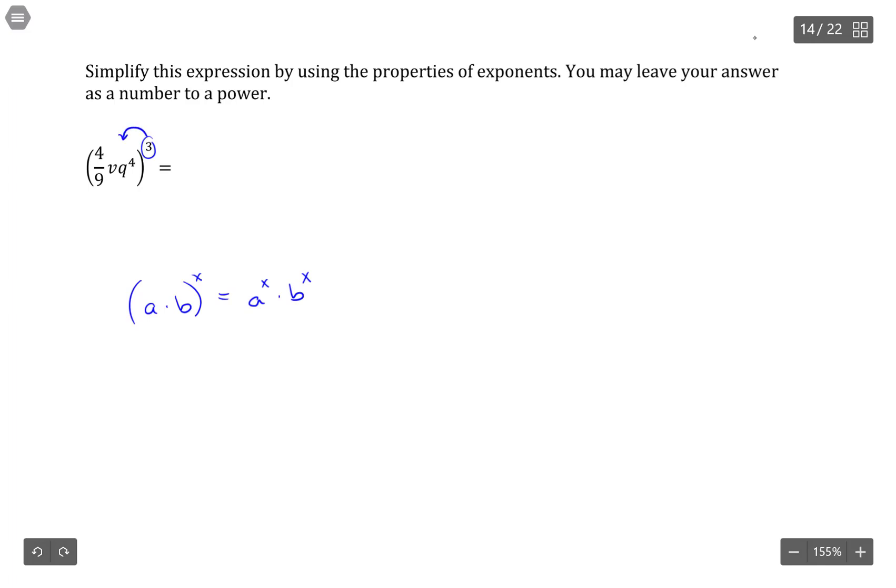So in effect, you're distributing this exponent into the parentheses. So that would give me 4 ninths to the third power times v to the third power times q to the fourth to the third power.